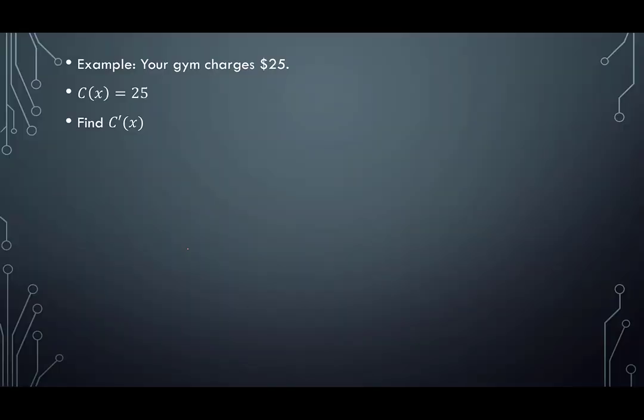Maybe if we think about a practical example, it'll make more sense. So say our gym charges $25. So the cost is 25. Well, if I want to find the derivative, the derivative is going to be zero. The amount that the gym is charging isn't going to change from month to month. So when I get January, February, March, April, right, they're all the same. So when I look at how did my gym change, it didn't change at all in the fee that it was charging.